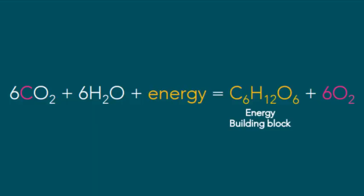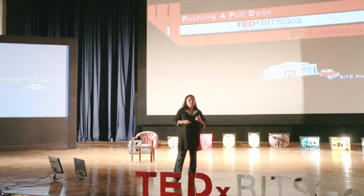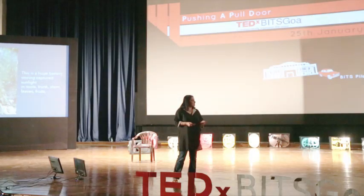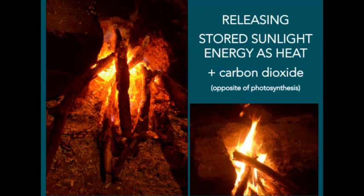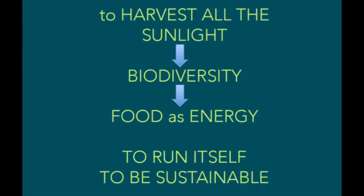Everything is harvesting sunlight. To run itself, the forest harvests sunlight through photosynthesis — photosynthesis takes the energy of the Sun and converts it to chemical energy, a form all life can use for energy and food. Energy is stored in the plant; the plant is akin to a battery, storing energy in its roots, trunk, stem, leaves, and fruit. When you burn twigs or a whole trunk you get heat and light — this is the energy of the Sun being released.